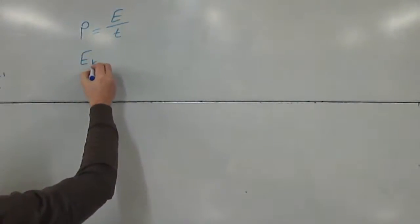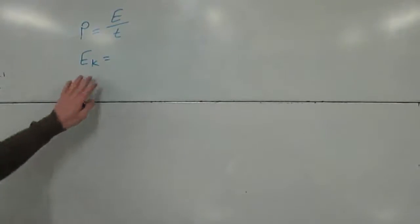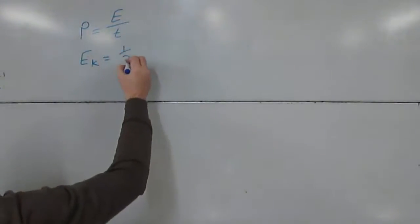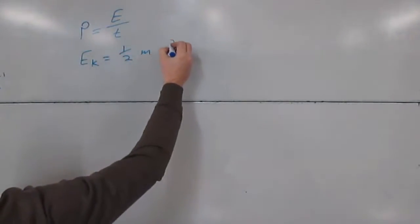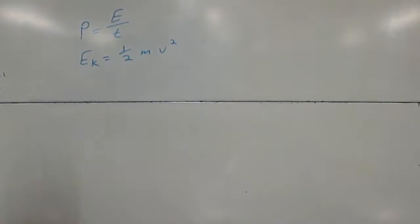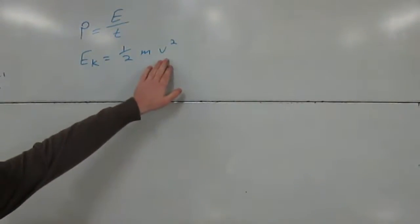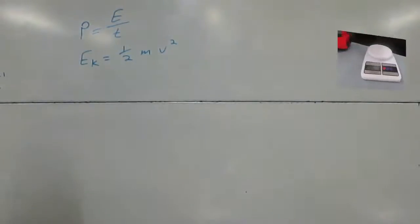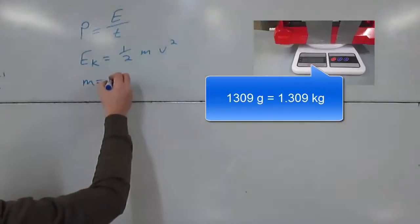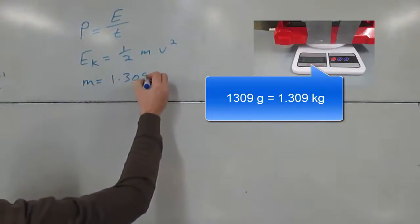In the bottle rocket, the type of energy we're considering is kinetic energy, which is given by Ek equals half mv squared. m is the mass and v is the magnitude of velocity, which is the speed in this case. We know the mass is equal to 1.309 kilograms.